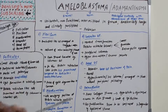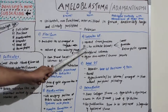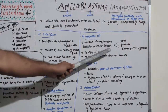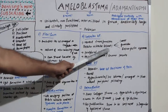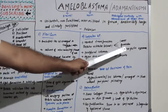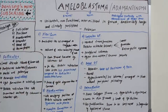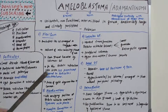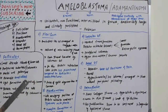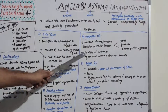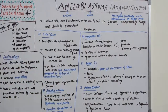Granular cell type: marked transformation of stellate reticulum cells into a coarse granular eosinophilic appearance, with peripheral columnar cells, hyperchromasia, and reverse polarity also seen.